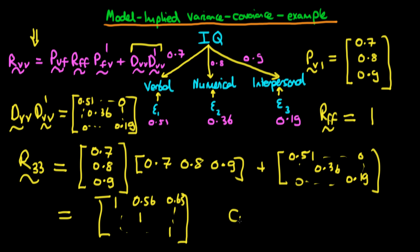So in this example, the covariance, or the model predicted covariance, between verbal and numerical reasoning would be equal to 0.56.